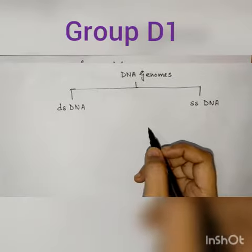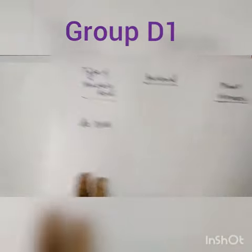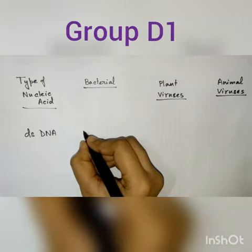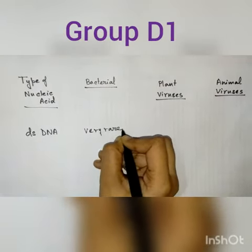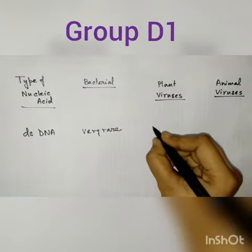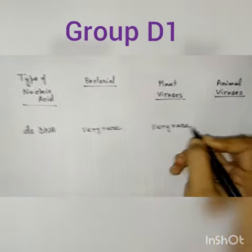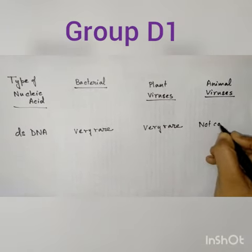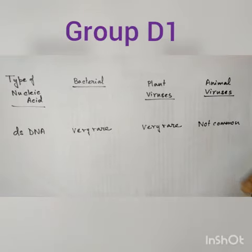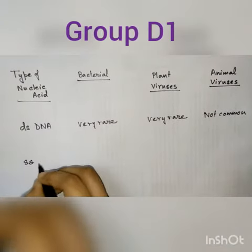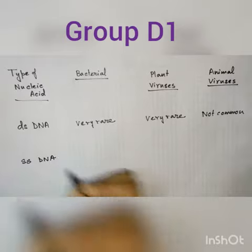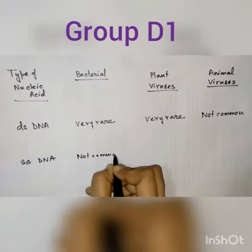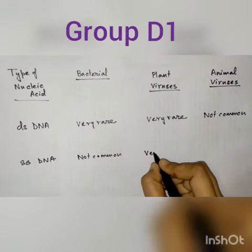The DNA virus replicates using a DNA-dependent DNA polymerase. DS DNA in bacterial viruses is very rare, and in plant viruses it is also very rare, but in animal viruses it is not common. For SS DNA, in bacterial viruses it is not common and in plant viruses it is very rare.